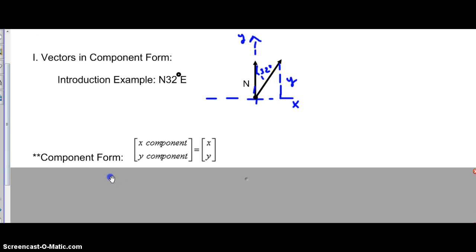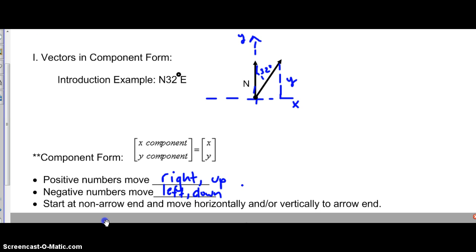Let's also talk about what positive numbers mean and negative numbers. If it has a positive value in the X, it would move in the positive direction, the horizontal, that would be to the right. If it's a positive number in the Y component, then it's going to be moving up in the positive direction. A negative number moves to the left when it's in the X component and then moves down when it's in the Y component.